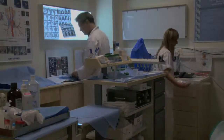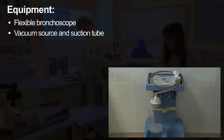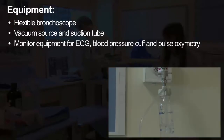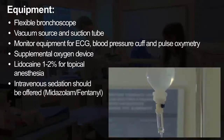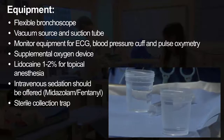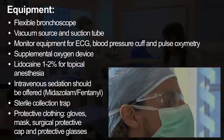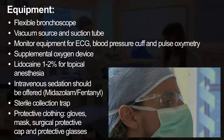In order to perform a flexible bronchoscopy, the necessary equipment includes a flexible bronchoscope, a vacuum source and suction tube, monitor equipment for ECG, blood pressure cuff, and pulse oximetry, a supplemental oxygen device, lidocaine 1–2% for topical anaesthesia, intravenous sedation, and a sterile collection trap. Protective clothing for staff includes gloves, a mask, a surgical protective cap, and protective glasses, in order to avoid any contamination with blood or saliva.